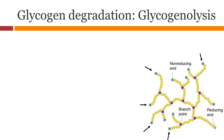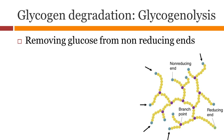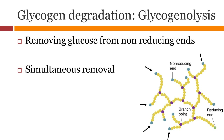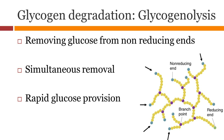Glycogen degradation, also known as glycogenolysis, is a process of removing glucose molecules from the non-reducing ends. Glycogen has multiple non-reducing ends. Thus, you can provide glucose at a very fast rate from glycogen.